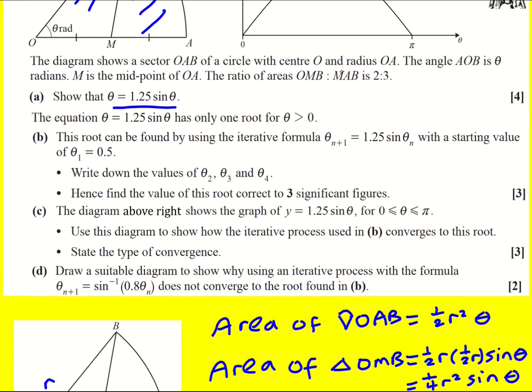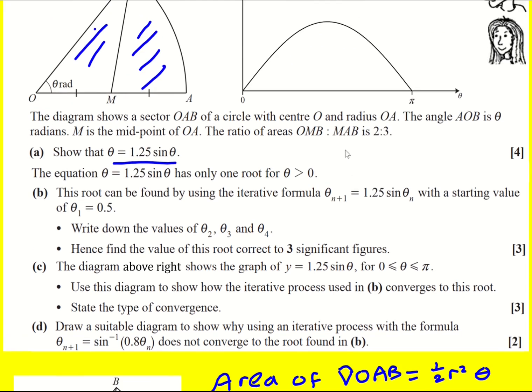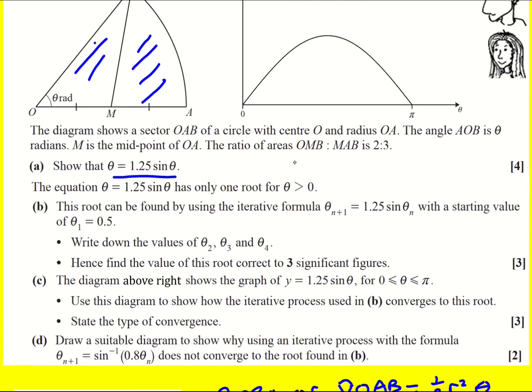The ratio is 2 to 3, that means the MAB is actually going to be bigger, and we can turn it into an equation. It must be actually that 3OMB is equal to 2MAB.